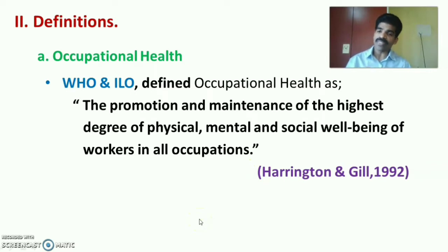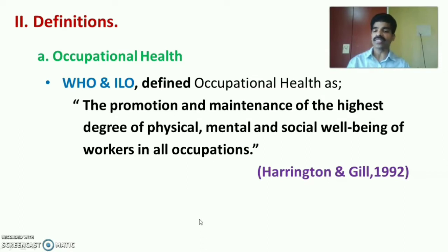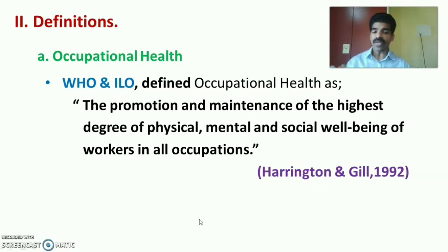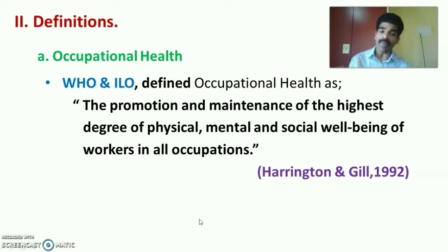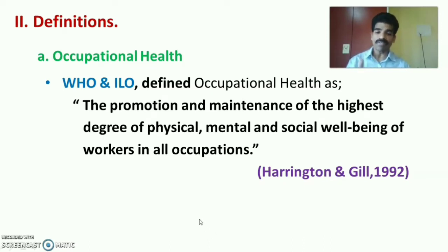Next are definitions. According to Harrington and Jill (1992), under WHO and the International Labour Organization (ILO), occupational health is defined as the promotion and maintenance of the highest degree of physical, mental, and social well-being of workers in all occupations — 'highest degree' meaning optimum or maximum health.